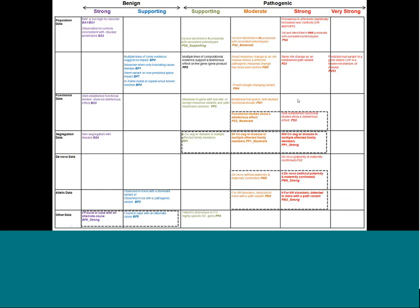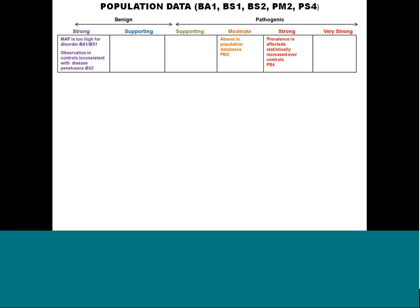Here is an edited grid showing common criteria that are modified in strength. Segregation data can be moved up to moderate and strong. De novo data with increasing occurrences is often moved from moderate to strong. The same naming algorithm applies when decreasing strength — for example, functional assay defaults to pathogenic strong, but if you move it to a moderate level, that would be PS3_moderate.